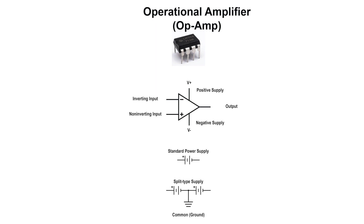The op-amp has two inputs and a single output. The inverting input, negative, produces an output that is 180 degrees out of phase with the input. The non-inverting input, positive, produces an output that is in phase with the input. The DC power supply terminals are noted as positive V and negative V. The supply power will be determined by the type of output the op-amp is required to produce.